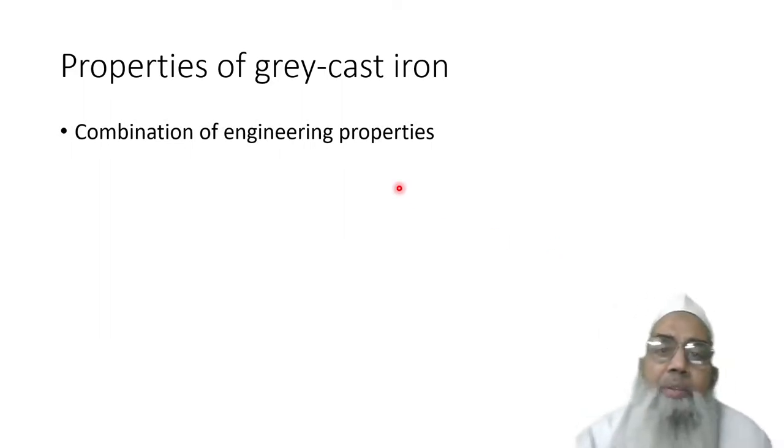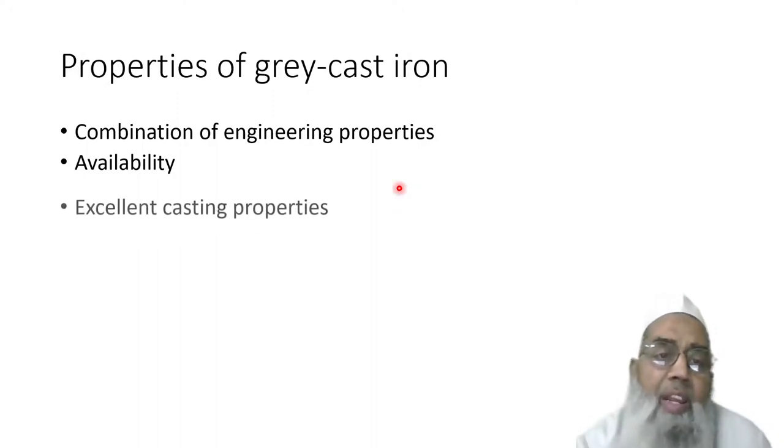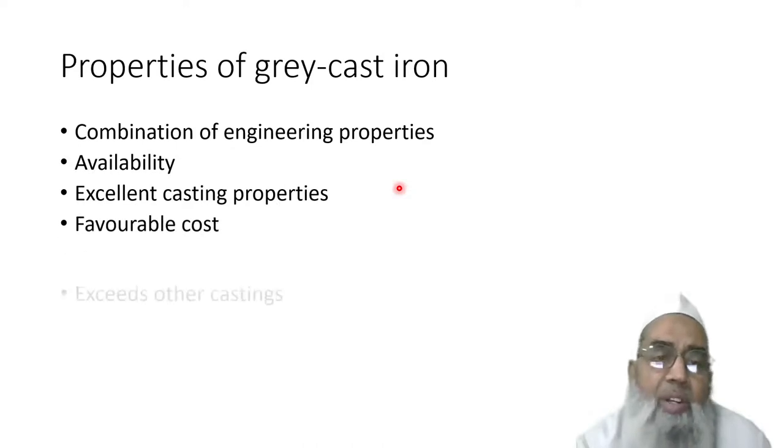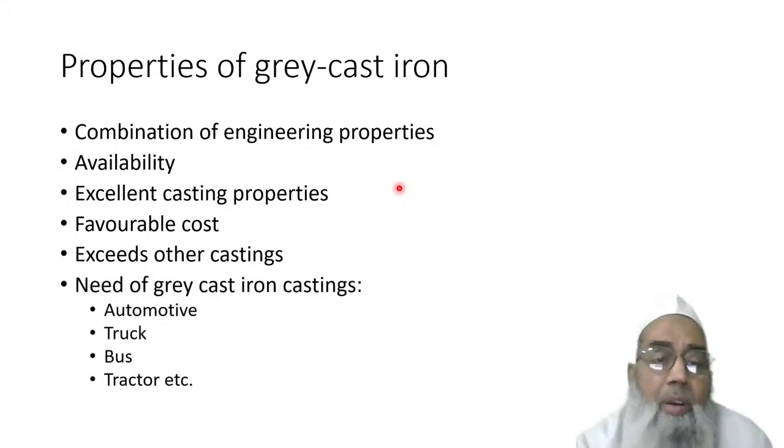This is a combination of engineering properties that can be obtained by having different varieties of grey cast iron. Its availability, excellent casting properties, and favorable cost exceed other castings. Grey casting is used in automotive, truck, bus, and tractor applications where it plays an important role.